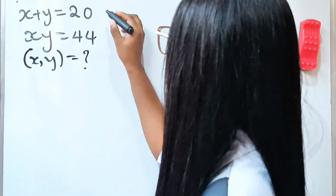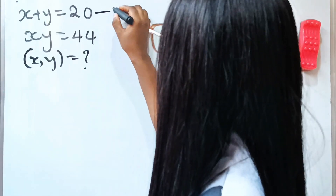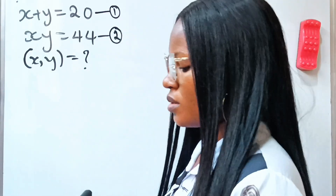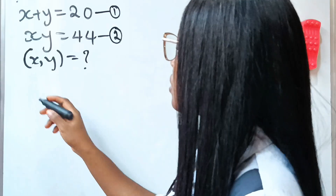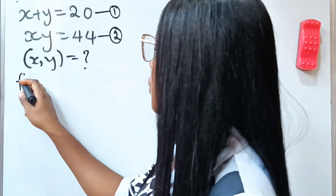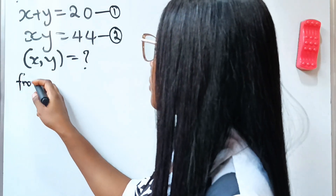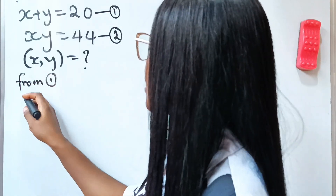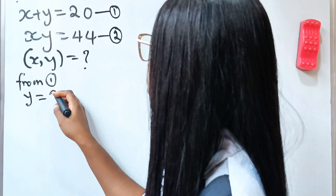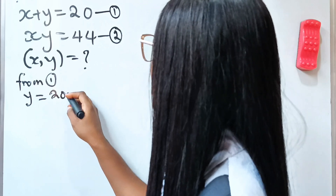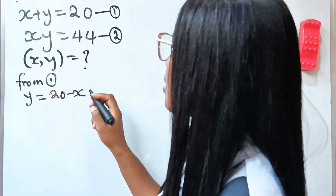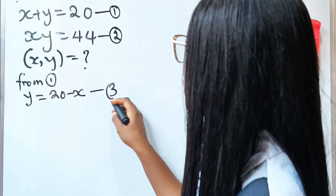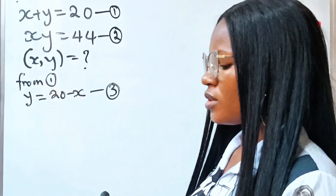First, let's call this equation 1 and this equation 2. So from equation 1, we can see that y is equal to 20 minus x. Let's call this equation 3.